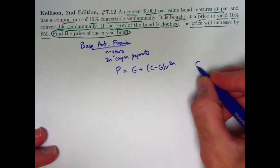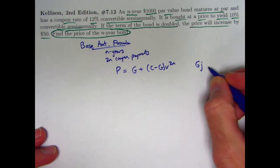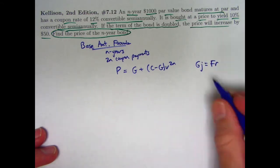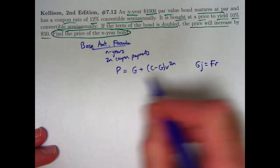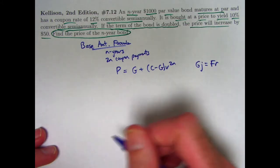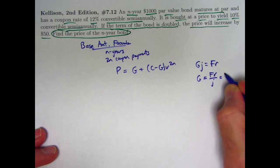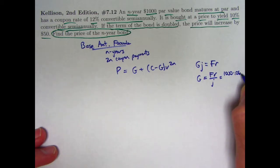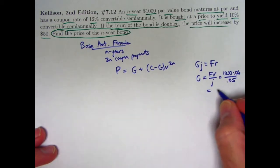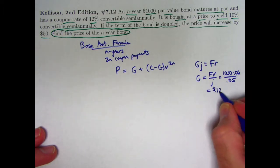It involves G, the base amount, where G times j, the semiannual yield rate, is equal to F times r, the face value or par value, which is a thousand times the semiannual coupon rate. I can solve this for G. I can plug in the numbers, F is a thousand dollars, r is 0.06, j is 0.05. This will simplify to twelve hundred dollars for the base amount.